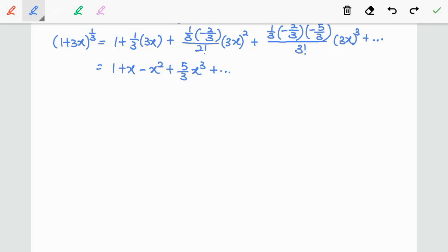Next we are going to substitute x equal to 1/125 into the expansion above in order to find the cube root 2. So on the left hand side we have (1 + 3(1/125))^(1/3) and on the right hand side we have 1 + 1/125 - (1/125)^2 + (5/3)(1/125)^3.